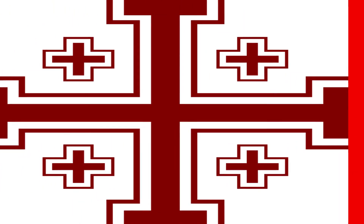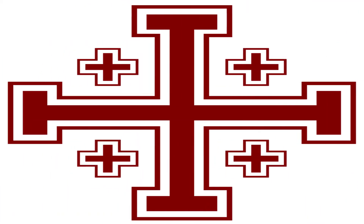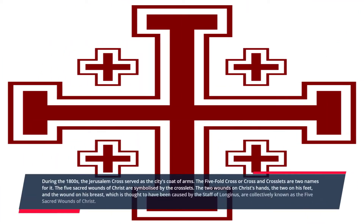Number three: the Jerusalem Cross. During the 1800s, the Jerusalem Cross served as the city's coat of arms. It is also known as the fivefold cross or the cross and crosslets. The five crosslets symbolize the five sacred wounds of Christ: the two wounds on his hands, the two on his feet, and the wound on his breast, thought to have been caused by the staff of Longinus.